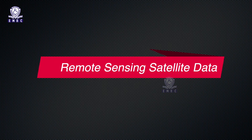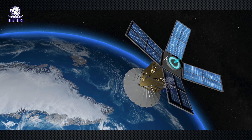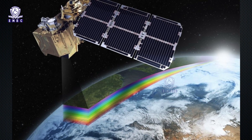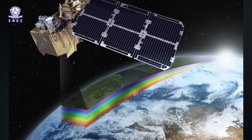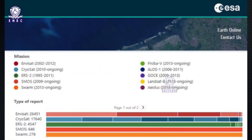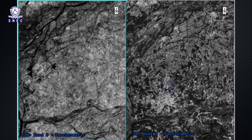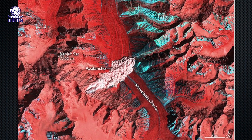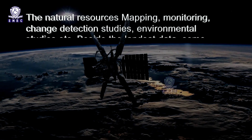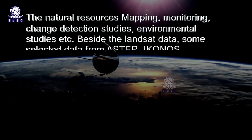Remote sensing data in India can be acquired from the National Data Centre (NDC), ISRO, located in Hyderabad. Data from many satellites are also available at the Global Land Cover Facility (GLCF), a centre focused on land cover science using remotely sensed data. Freely downloadable archived Landsat orthorectified imagery is available for all bands including ETM+ PAN, TM, and MSS data, with locational accuracy of more than 50 meters. This data is useful for mapping, monitoring, change detection studies, environmental studies, and more.